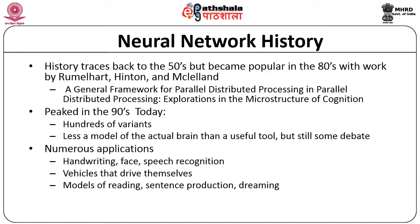Now let us understand the history of neural networks. Neural networks started as early as the 1950s, but became very popular only in the 1980s. Initially, a framework was created for parallel distributed processing, and this was used for exploring the microstructure of cognition. This was created by Rumelhart, Hinton, and McClelland in the 1980s. This work kick-started the applications of neural networks in various domains.